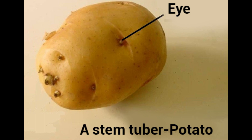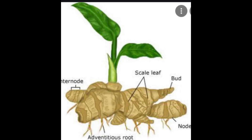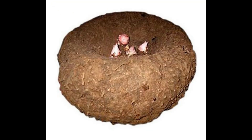These underground stems can store food, which is why these parts are swollen. Underground stems are also used for propagating new younger plants. In potato, colocasia, elephant yam, greater yam, ginger, and turmeric, we use the stem cuttings to produce new young plants.